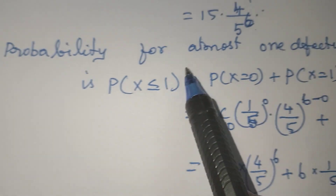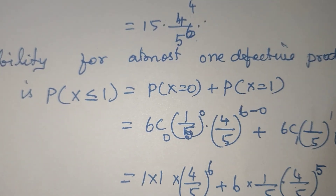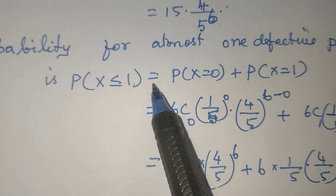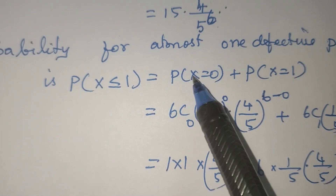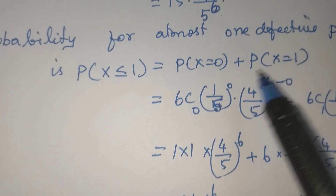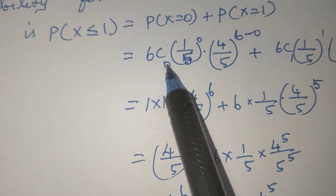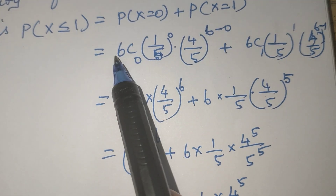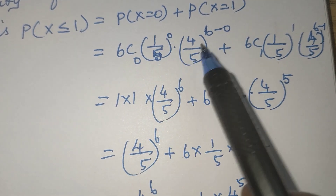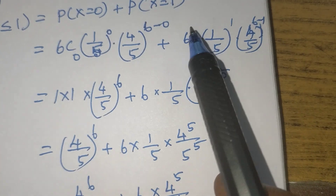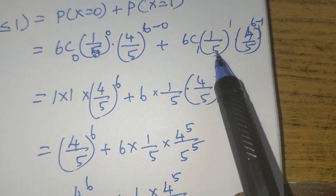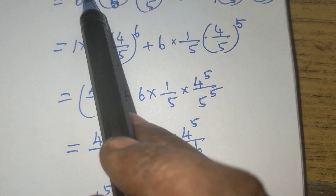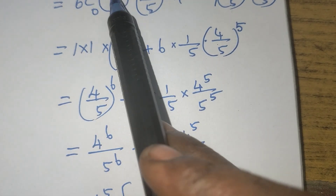Next, second subdivision: probability for at most one defective product is P(X ≤ 1). P(X ≤ 1) equals P(X = 0) plus P(X = 1). Using the binomial distribution: 6C0 times (1/5)^0 times (4/5)^6 plus 6C1 times (1/5)^1 times (4/5)^5.